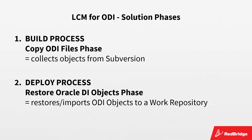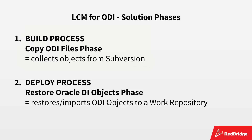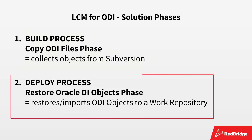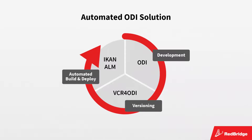The LCM for ODI solution includes two dedicated phases. The first executes the build process: it retrieves the objects or scenarios out of the VCR and puts them in an archive for further deployment use. The second deploys the archive — namely the objects or scenarios — to an ODI repository. Using those three components, you will achieve a fully automated lifecycle.